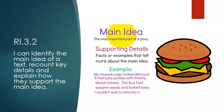I'm going to first start by reminding you about our three key ELA standards for the day. RI 3.2: I can identify the main idea of a text, recount key details, and explain how they support the main idea. So main idea and details.